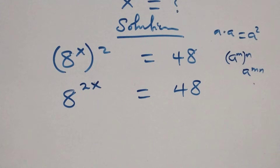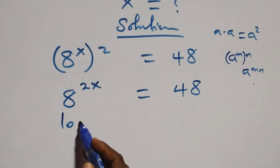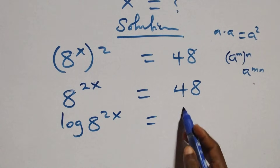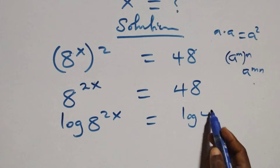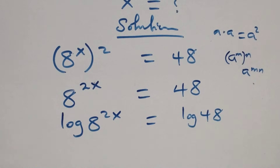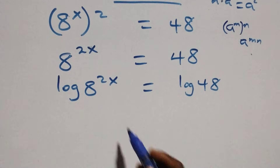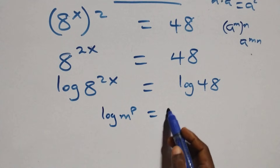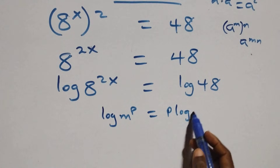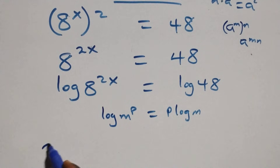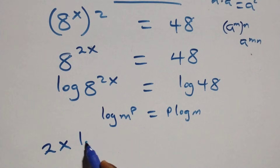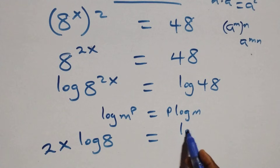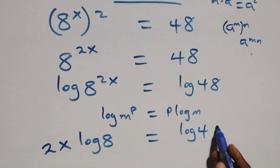We take the log on both sides. Here we have log of h raised to power 2x equals log of 48 on this side. Then we apply the power rule of logarithms: log of m raised to power p is the same as p times log m. So here we have 2x times log 8 equals log 48.